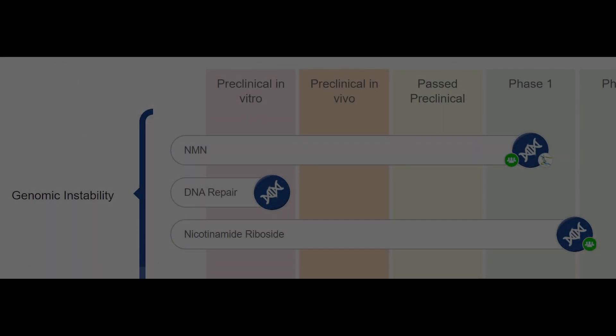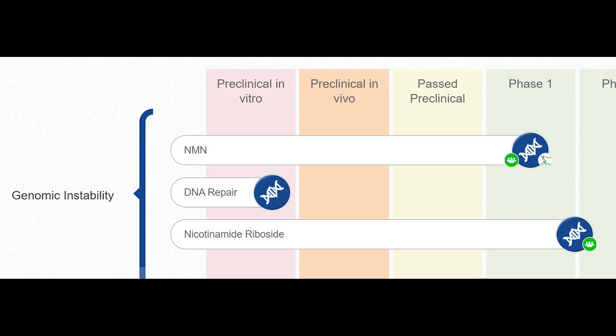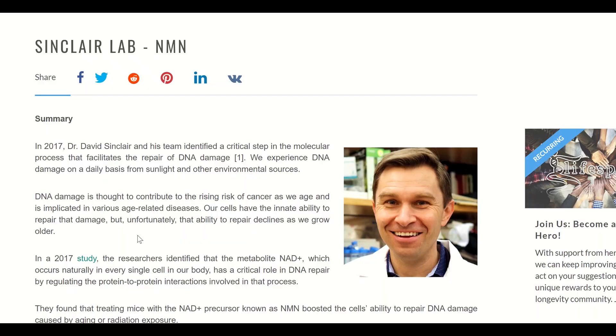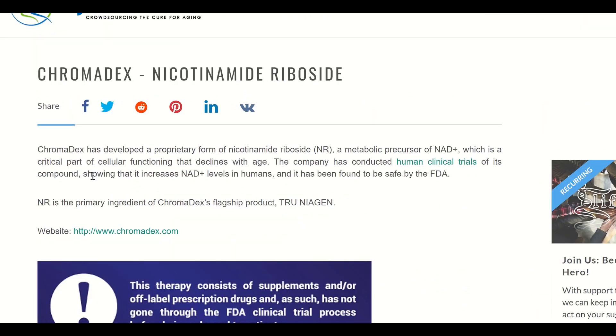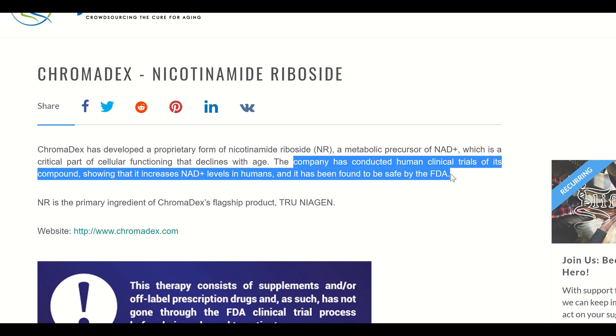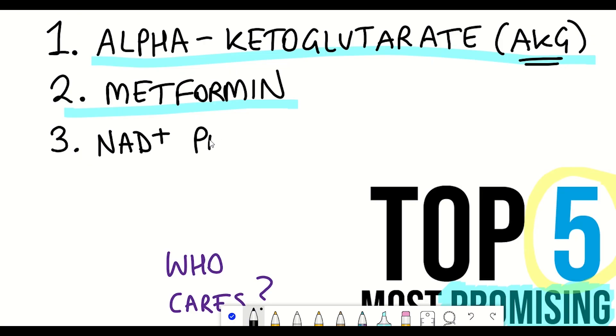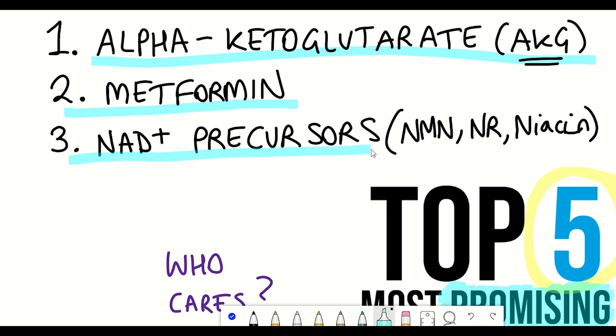However, if we go into the rejuvenation roadmap on LEAF's website, we can see that there are clinical trials being conducted using NMN by the Sinclair Lab, whereby NMN is currently in human clinical trials at Brigham and Women's Hospital. And nicotinamide riboside has been assessed in human clinical trials conducted by ChromaDex, which is a company that has developed a proprietary form of nicotinamide riboside that has been found to be safe by the FDA. So for certain, more studies are needed to really understand whether or not human health span can be extended. However, due to the availability of NAD+ precursors and the high interest in it, in terms of the number of studies being conducted, I thought that NAD+ precursors should make it onto my list.